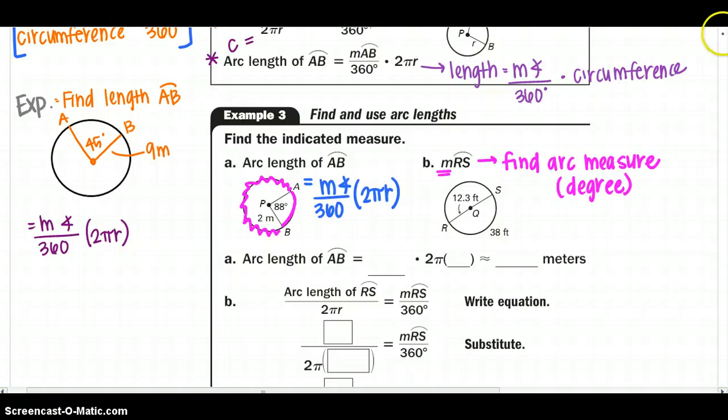So the arc length of AB equals 88 degrees over 360, and I remember that because I want my degrees to be together in the same proportion. Equals 2 pi r radius, which they give us as 2, and I would be approximately 3.07 meters. So again, there are a couple ways to go about it, but this seems to be the easiest.